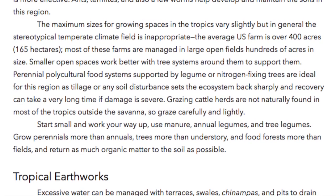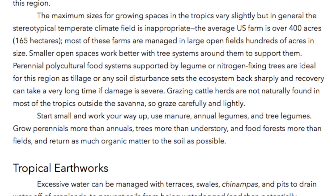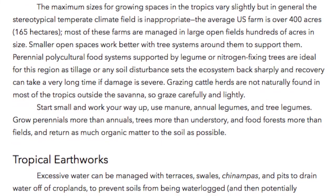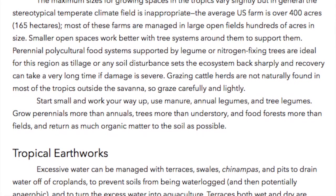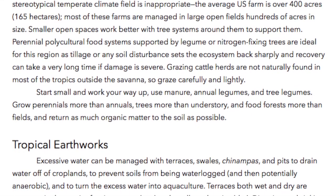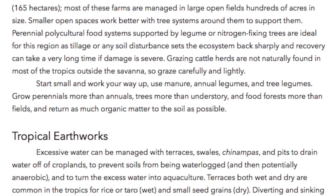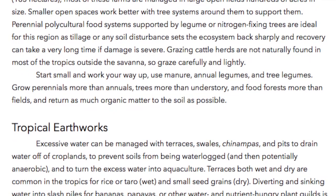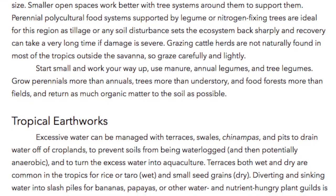Smaller open spaces work better with tree systems around them to support them. Perennial, polycultural food systems supported by legume or nitrogen-fixing trees are ideal for this region, as tillage or any soil disturbance sets the ecosystem back sharply and recovery can take a very long time if damage is severe. Grazing cattle herds are not naturally found in most of the tropics outside the savannah, so graze carefully and lightly.